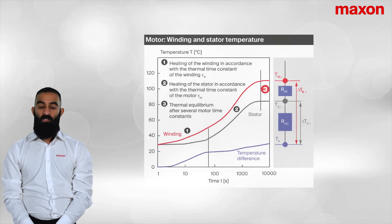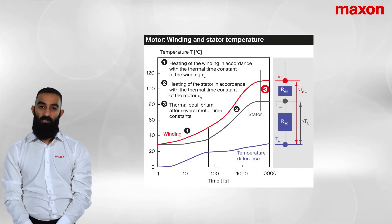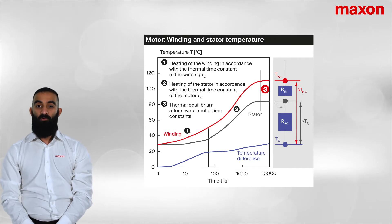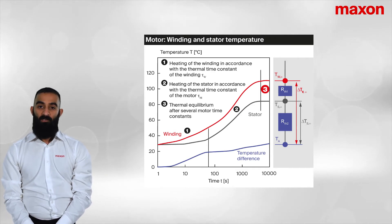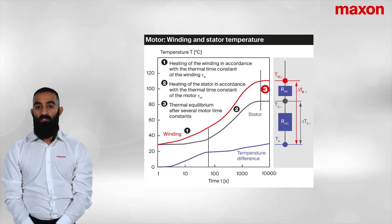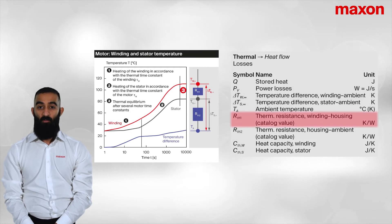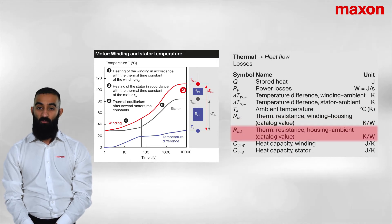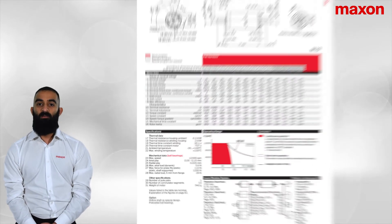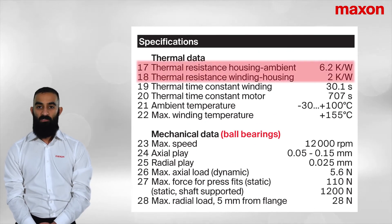Simultaneously, as the winding temperature increases, the heat is then dissipated to the stator housing — shown by the grey line. Finally, the heat then dissipates to the ambient environment. The two variables introduced relate to the thermal resistances and govern how well heat is dissipated from the surfaces. RTH1 denotes the thermal resistance between the winding and the housing. RTH2 denotes the thermal resistance between the stator and the ambient. The thermal resistances are listed and quantified on lines 17 and 18 in Maxon motor datasheets.